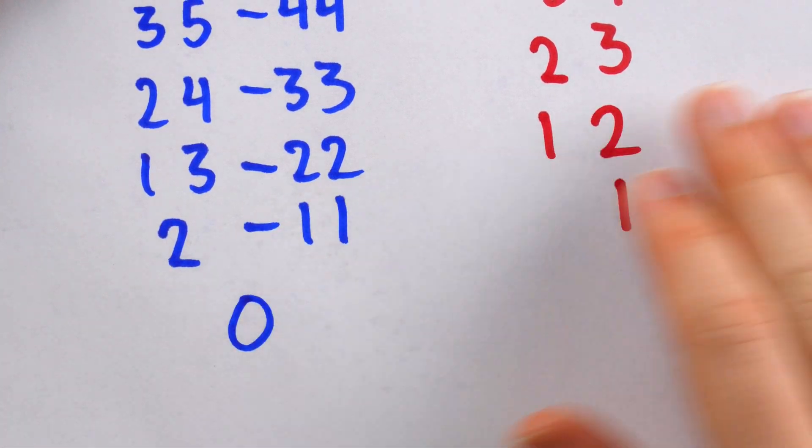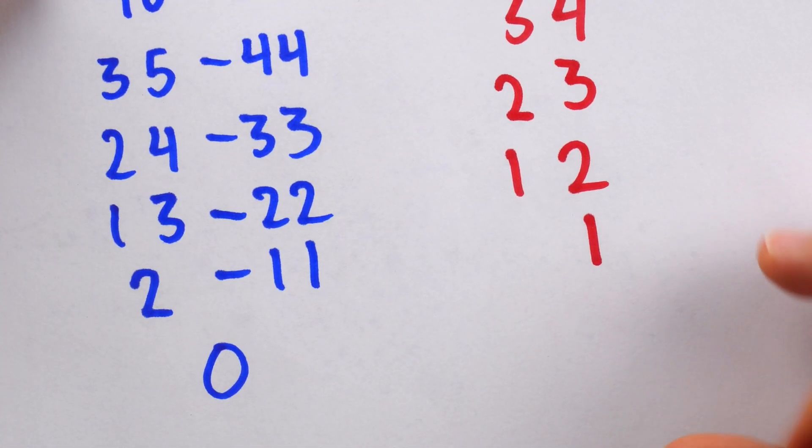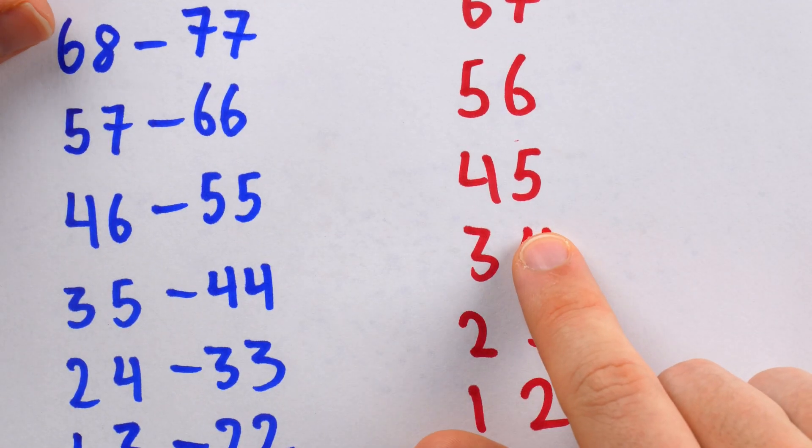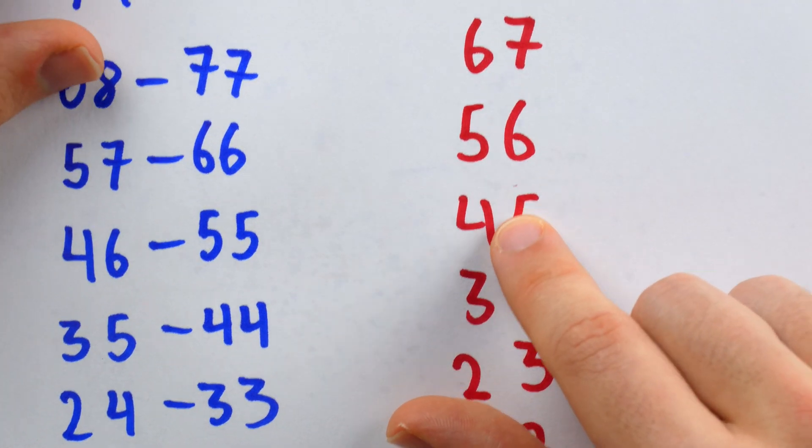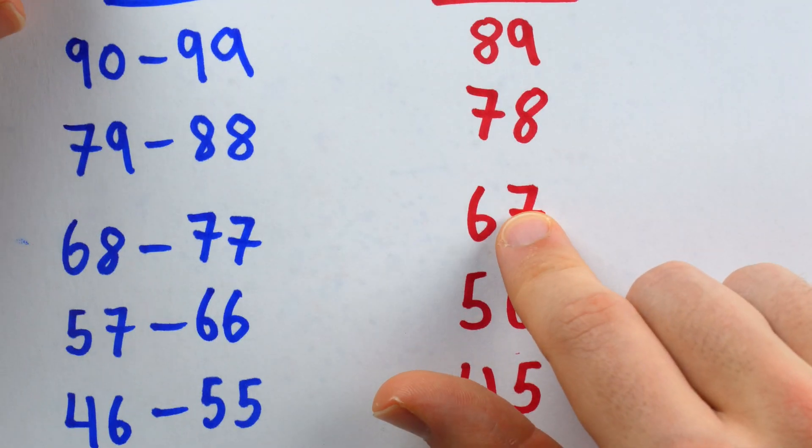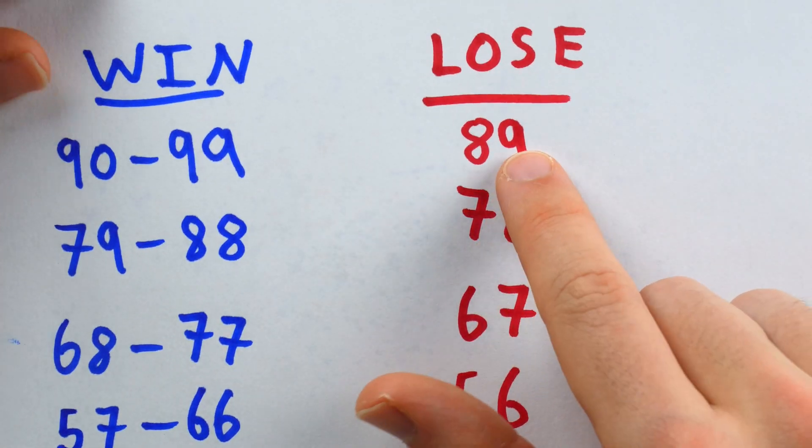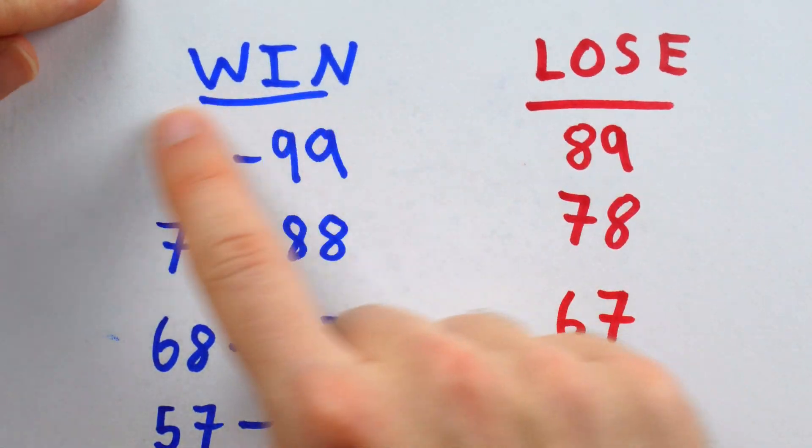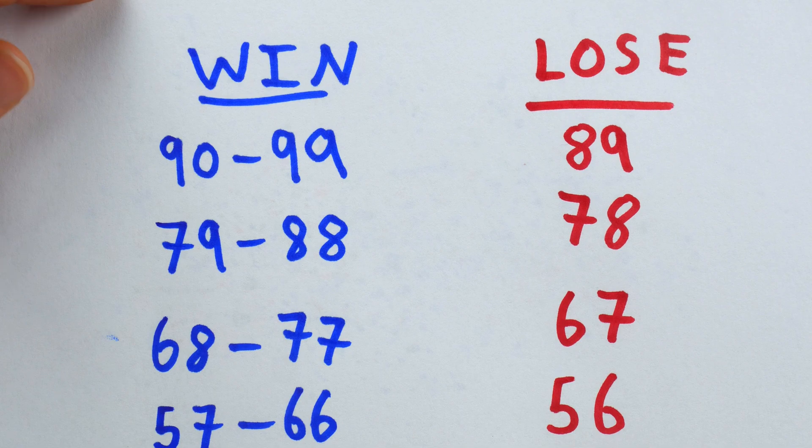So as the first player, you're guaranteed to win this simple game by simply continuing to put the second player into one of these situations where the subtotal is some number that's one greater than a multiple of 11. Thus, they're forced to eventually play from the 89 position, where they're going to set you up for your big win.